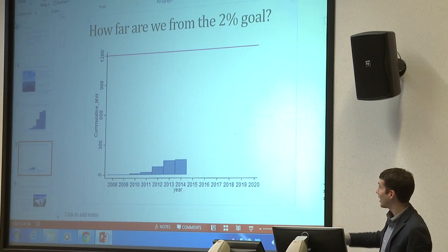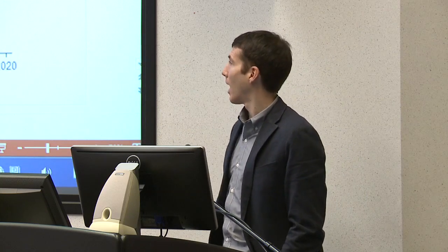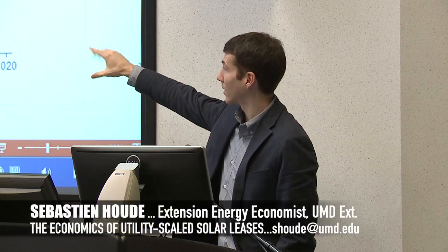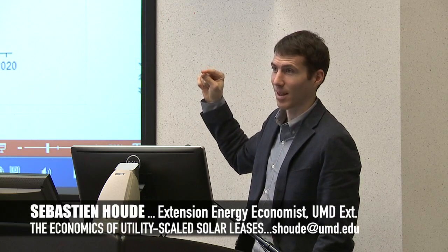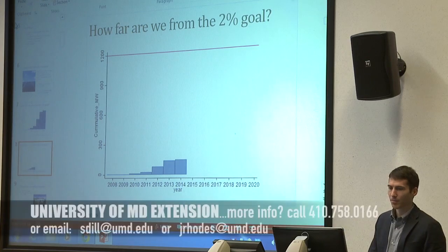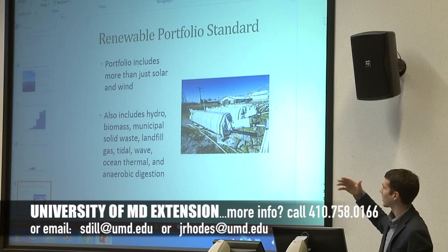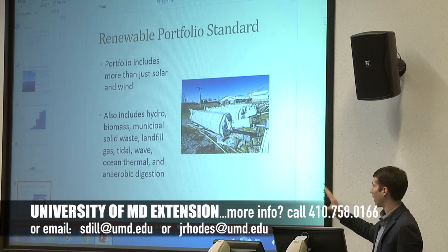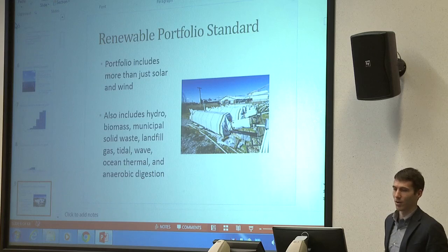The solar industry activity in Maryland is just starting and will grow. Developers will look for any type of land — agricultural, commercial, rooftop, residential — all of it counts toward the 2% solar goal. That 2% may seem small but represents a significant amount of work. The RPS also includes wind, hydro, biomass, solid waste, and landfill gas, which may also affect farmers through options like anaerobic digestion projects.